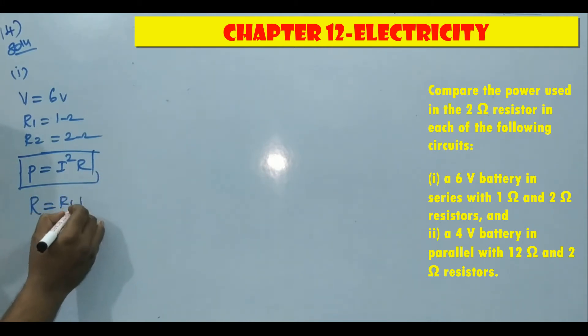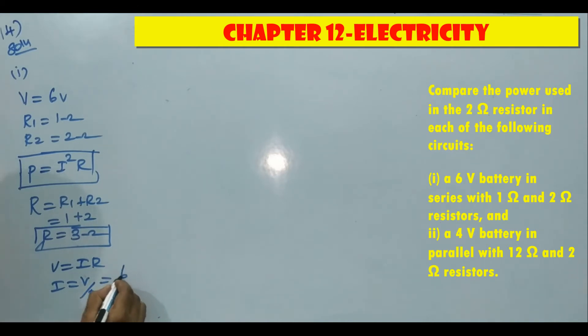This is connected in series, then R is equal to R1 plus R2, which is 1 plus 2, nothing but 3 ohm. So R equivalent is 3 ohm. We have to find I value. V is equal to IR, so I is equal to V by R. V is 6, R is 3, then I is 2 ampere.